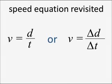In the first tutorial on speed, distance and time, you were shown the basic equation of speed, which was V equals D over T, or distance travelled over time taken.